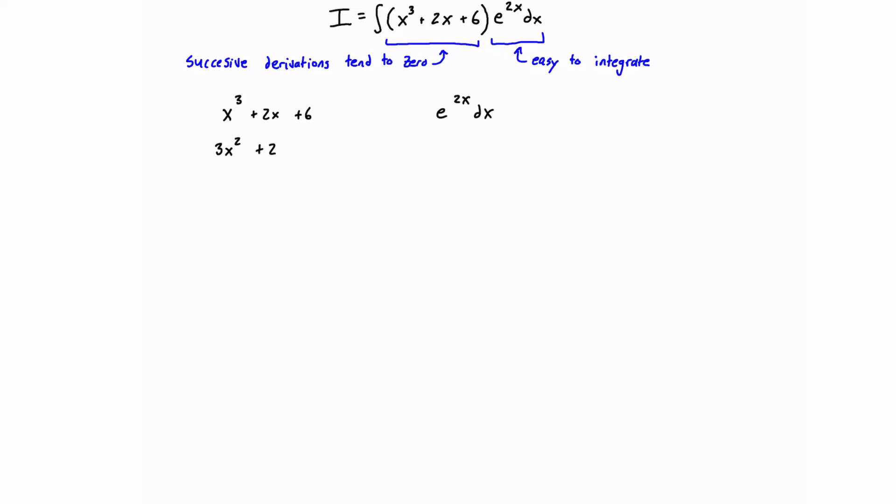And then the derivative of that, again, is just going to be equal to 6x. And then the derivative of that is 6, and then 0. So successive derivations tend to zero, which is what we were looking for.